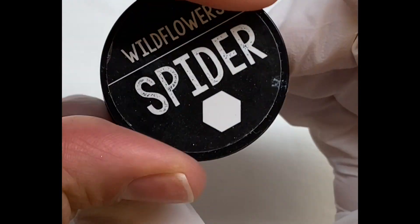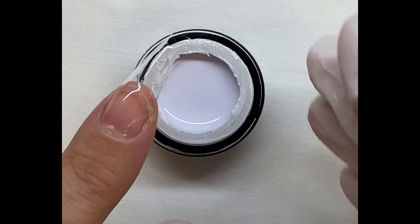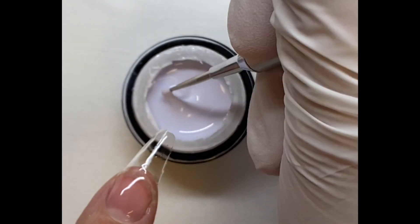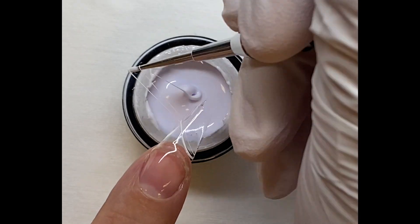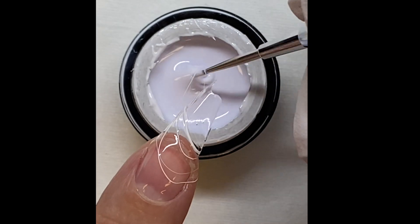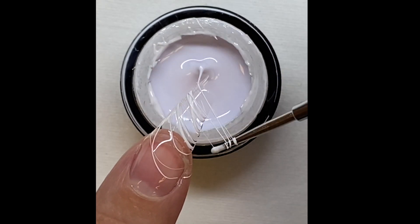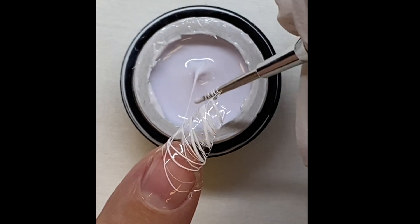Now grab the Wildflowers spider gel. I'm not sure what color you got in your box but they're all great. If you did get a sparkly one, just make sure that you use it thin, don't go too thick. Dip a stylus, a dotting tool, whatever you want to use in there and just start twirling it around.